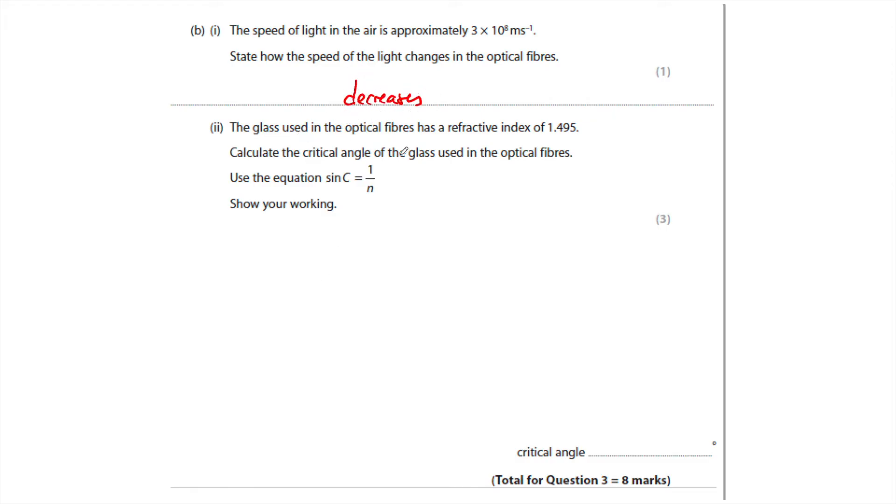The glass used in optical fibers has a refractive index of 1.495. Notice this time they've given you four significant figures, so don't round up too early. Calculate the critical angle of the glass used in optical fibers. Use the equation sine of c is 1 over n. 1.495. Show your working.